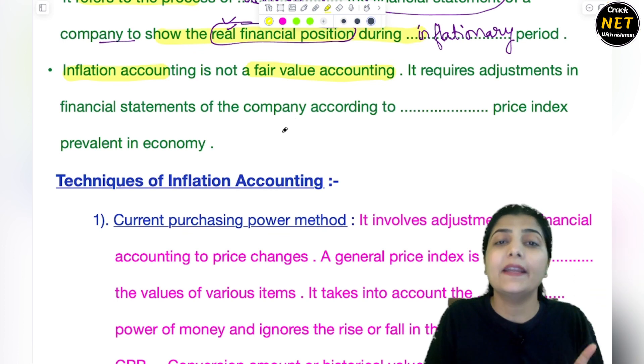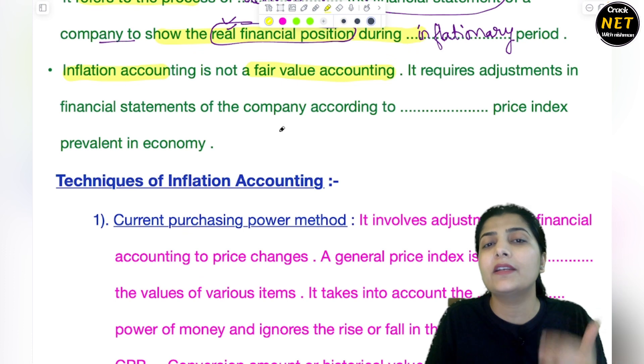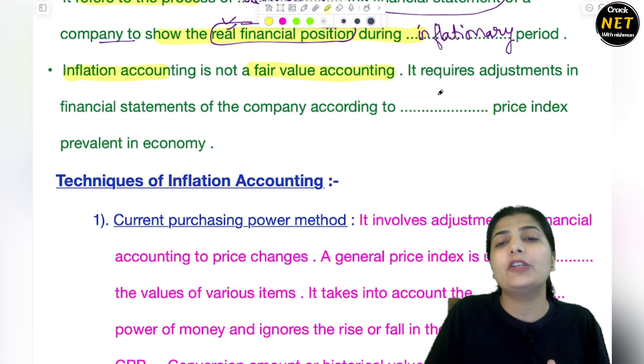But inflationary accounting says you don't write that 40 lakhs value. You have to write the value that if anyone checks at any time, based on the present inflation, what rate is prevailing - that value you have to mention.